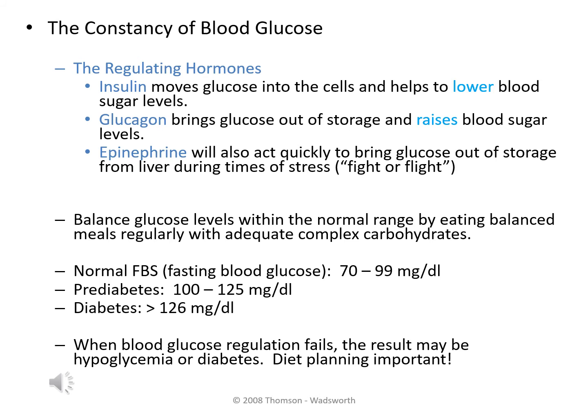One of the main ways that we can ensure that we have adequate amounts of glucose in our blood system at all times is to consume balanced types of meals with adequate complex carbohydrates. Remember, it's those carbohydrates that are eventually broken down into the individual glucose units. When blood glucose regulation fails, the results can be hypoglycemia or low blood glucose, or hyperglycemia — elevated blood glucose — which in turn can lead to diabetes. Also note what the levels are for a fasting blood glucose or a fasting blood sugar, and what the levels would be for someone possibly diagnosed with prediabetes as well as diabetes.